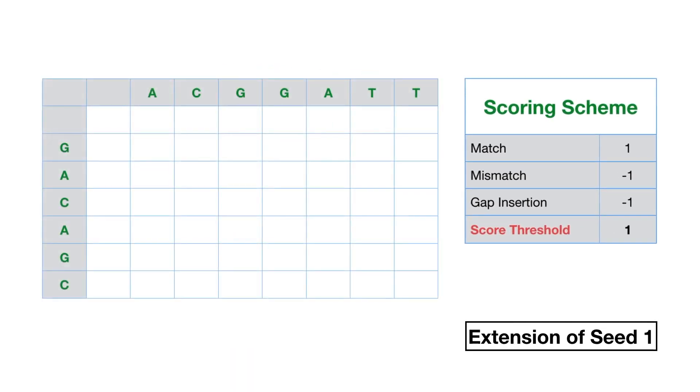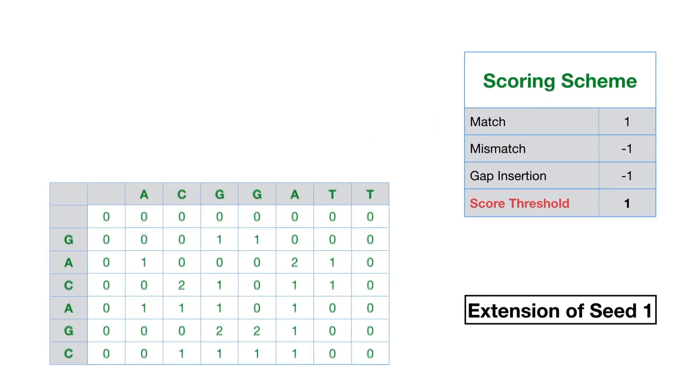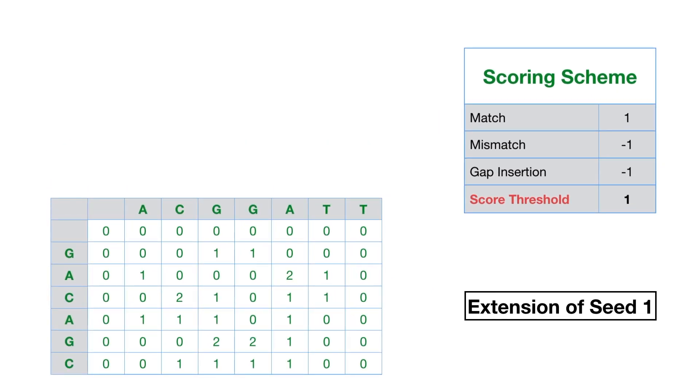We use Smith-Waterman to extend the seeds into an alignment. Here is the calculation that corresponds to seed 1. Following the previously outlined method, we plot the extension scores in a graph. The upper corner is 0.